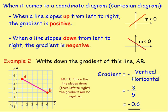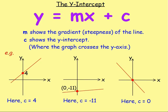The gradient of a line is positive if it slopes up from left to right, and negative if it slopes down from left to right. If you are given two points on a coordinate diagram, draw in a right-angle triangle, measure the vertical distance and the horizontal distance, sub them into the gradient formula, and you can work out the gradient. Remember, because the line slopes down from left to right, it's a negative gradient.